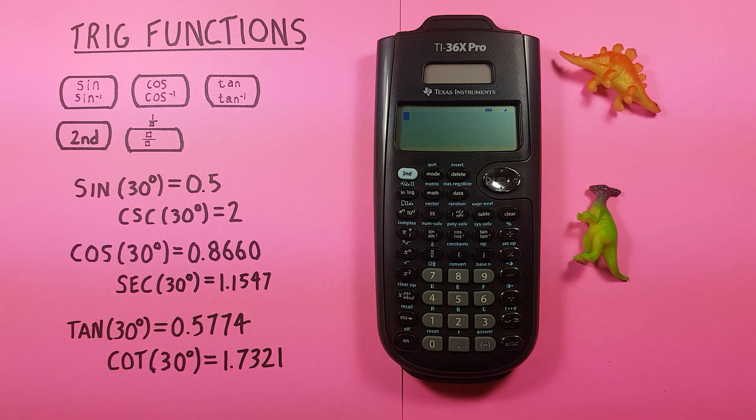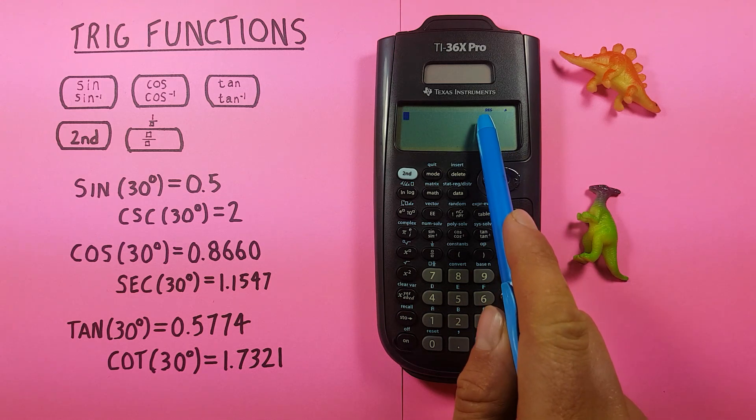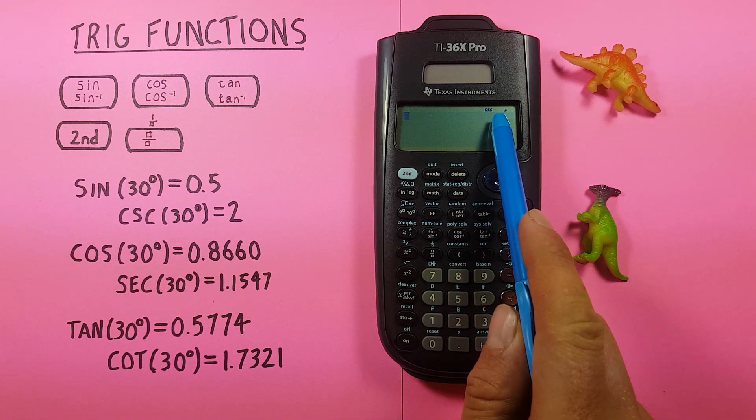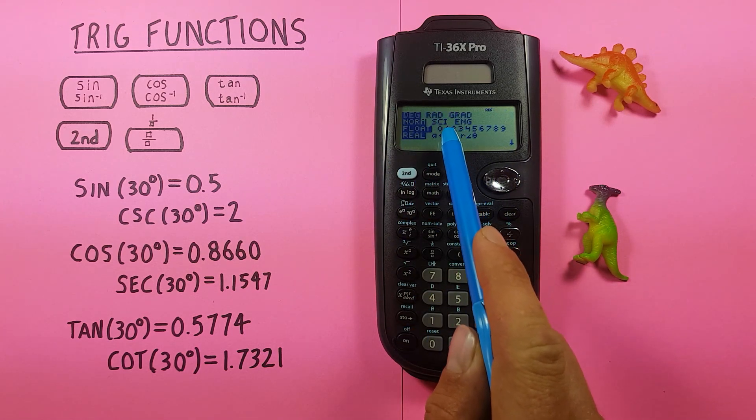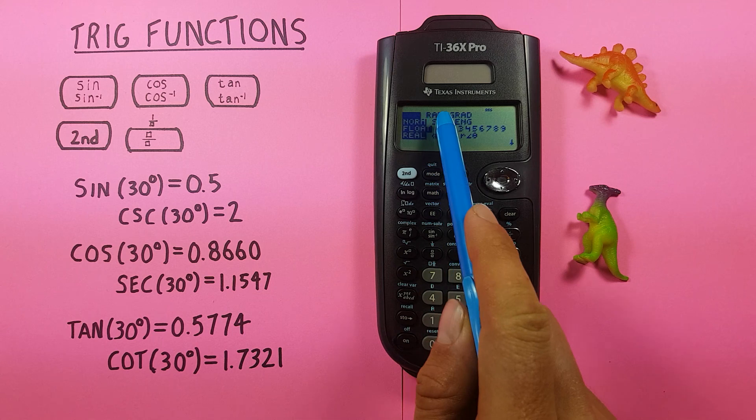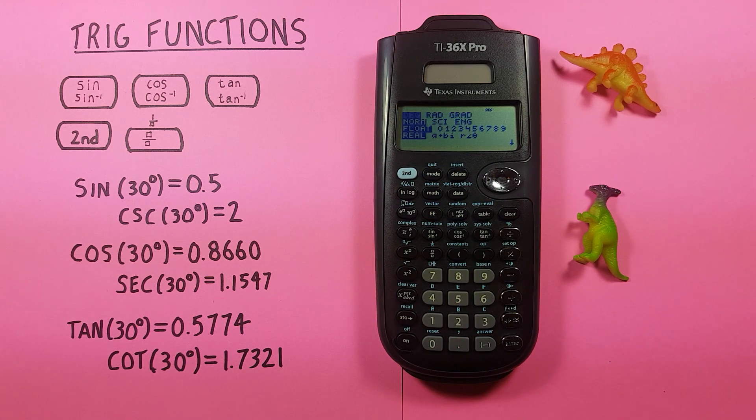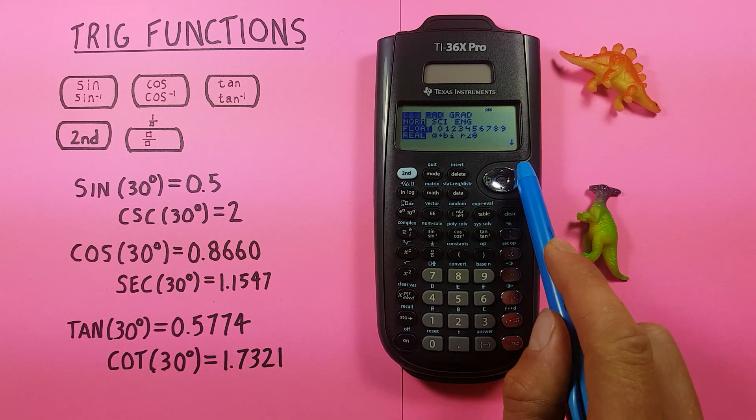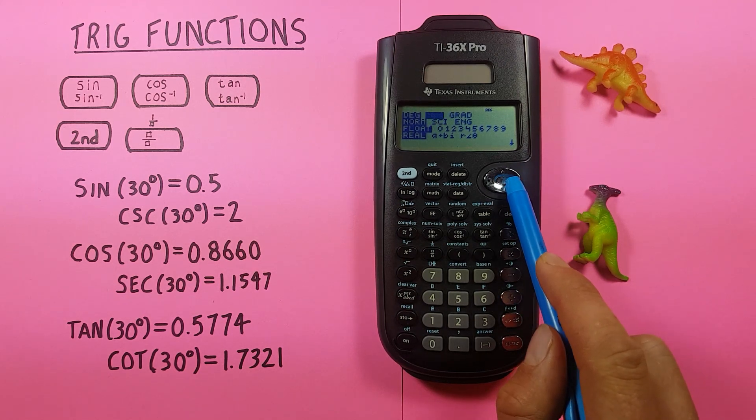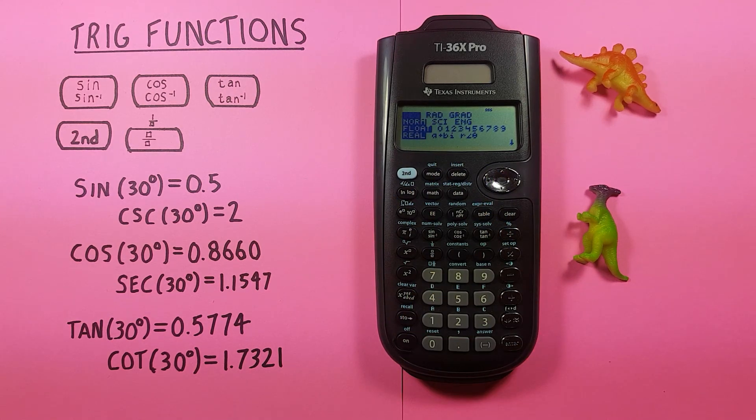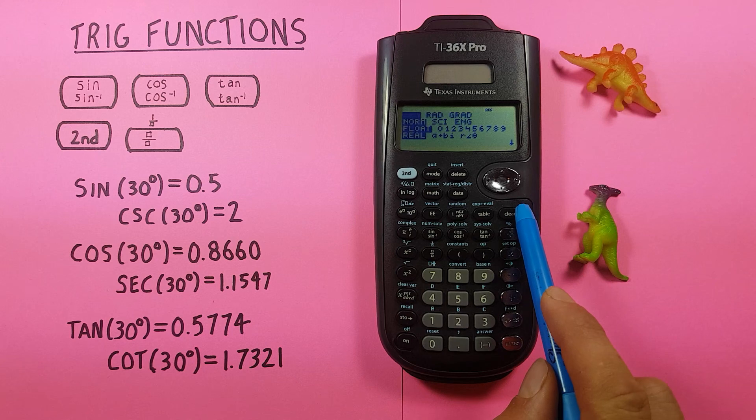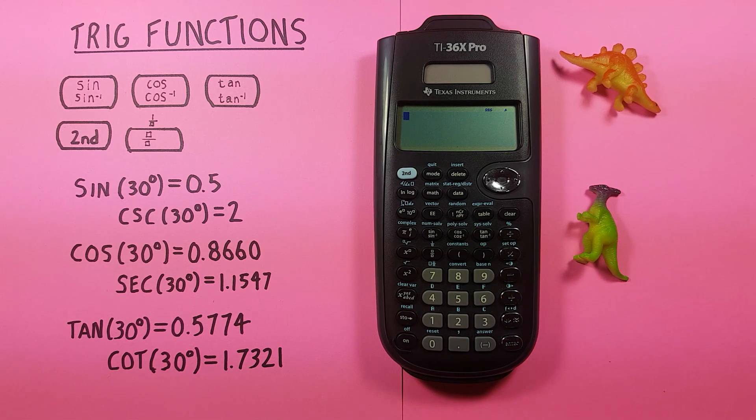So the first thing we want to do is make sure our calculator is in degree mode. You can confirm that it is by seeing the DEG on the top of your screen right there. If you don't see it, press mode to bring up this menu. The top three options are your degree, radian, or grad options. You can move left to right with the arrow keys. We want to highlight DEG, which should be the first one, press enter and press clear, and you should now be in degrees mode.